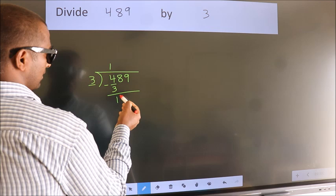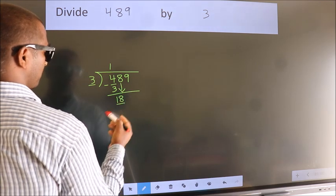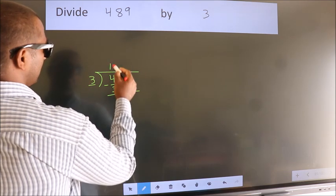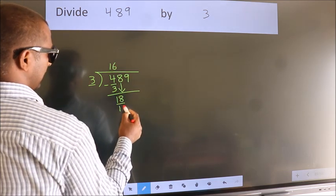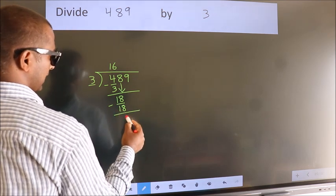After this, bring down the beside number. So 8 down. So 18. When do we get 18? In 3 table. 3, 6, 18. Now we subtract. We get 0.